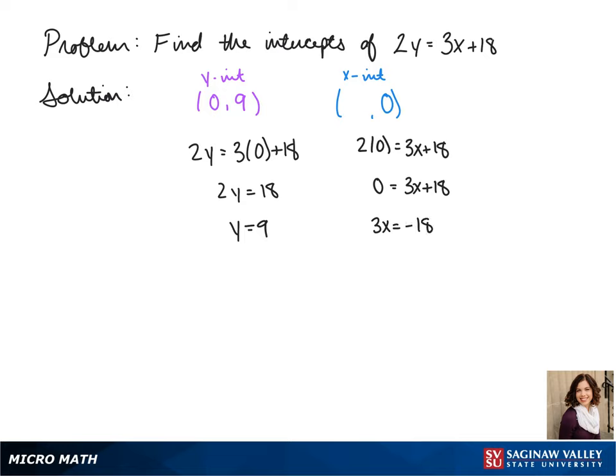Now we subtract 18 to the other side and get 3x equals negative 18. Divide both sides by 3 and x equals negative 6.